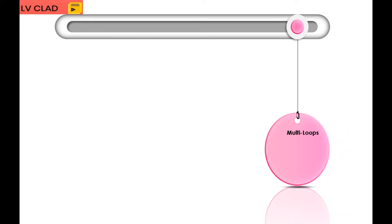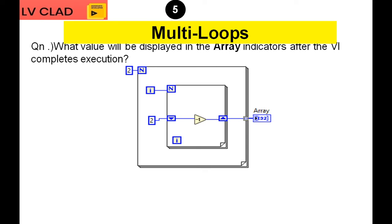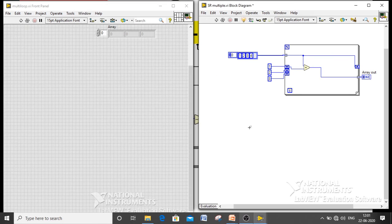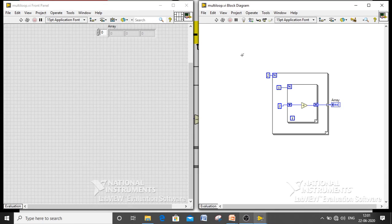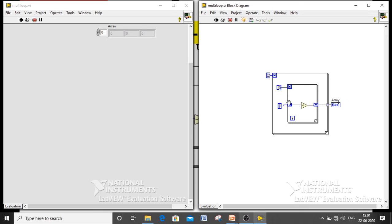The last concept is multi-loop — already discussed in the for loop concept. Here an add function is incorporated with the shift register. The outer loop executes two times. During the first iteration, i equals zero, so the inner loop never iterates and simply passes the value 2 to the shift register output — the array takes that 2. When i equals 1, it decrements by 1, so 2 minus 1 equals 1. The answer is 2, 1.